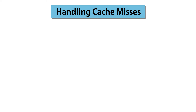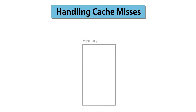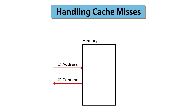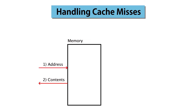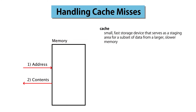Recall that, conceptually at least, memory is just a large byte-addressable array. Whenever a program references an address from memory, the memory system must deliver the current contents of that address to the processor. The implementation is much more complex and likely involves caching. A cache is a small, fast storage device that serves as a staging area for a subset of the data from a larger, slower memory.